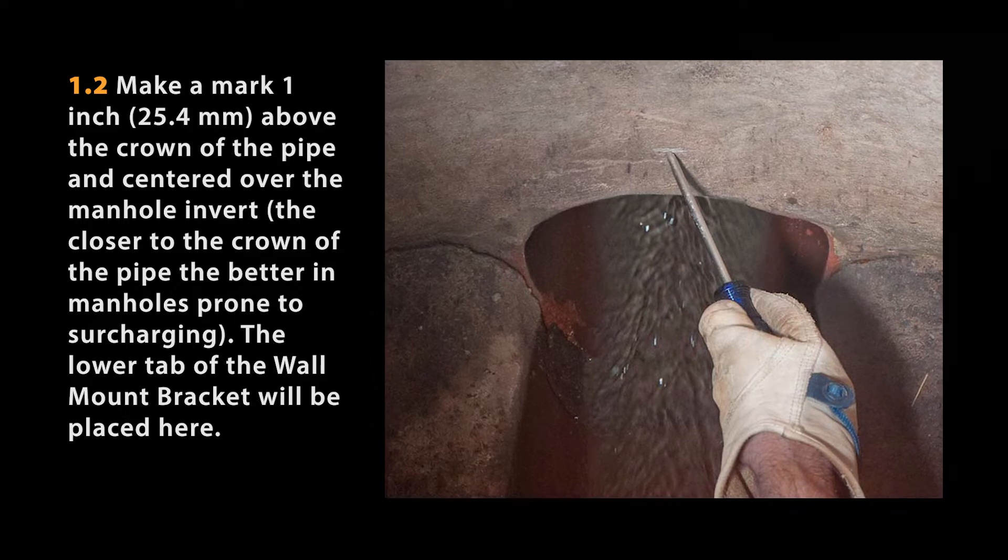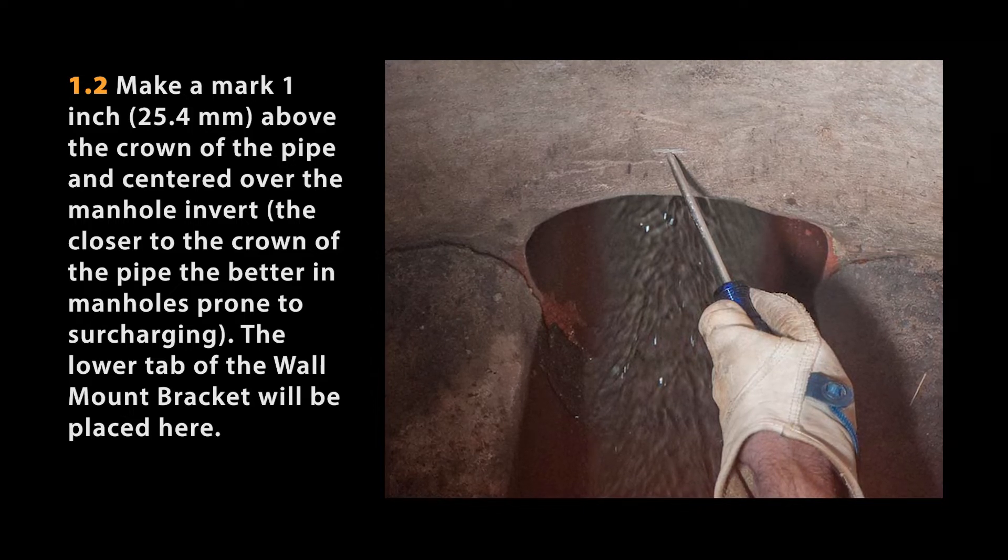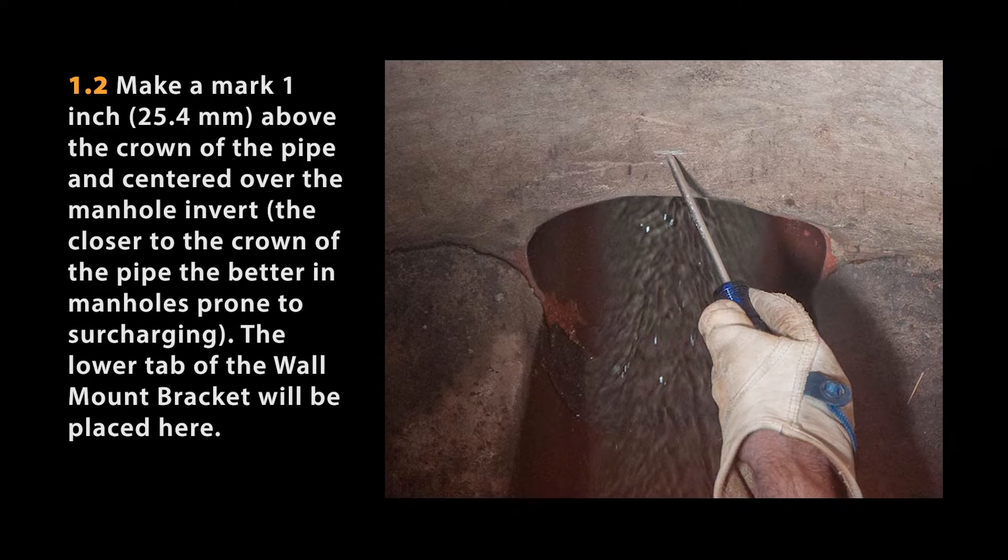The closer to the crown of the pipe, the better in manholes prone to surcharging. The lower tab of the wall mount bracket will be placed here.